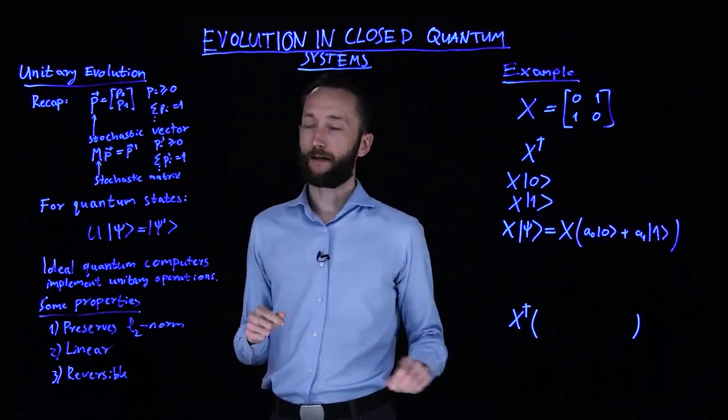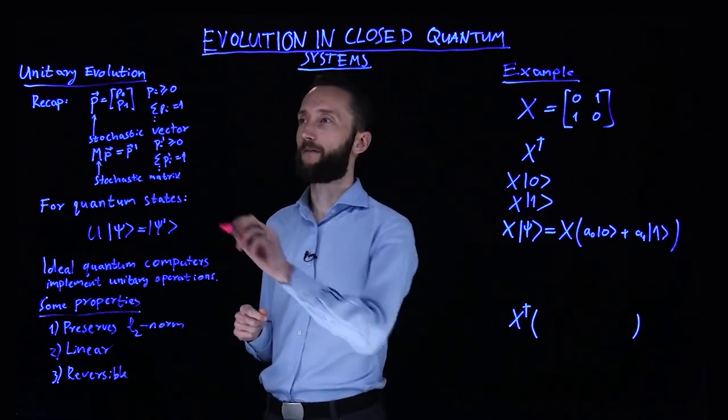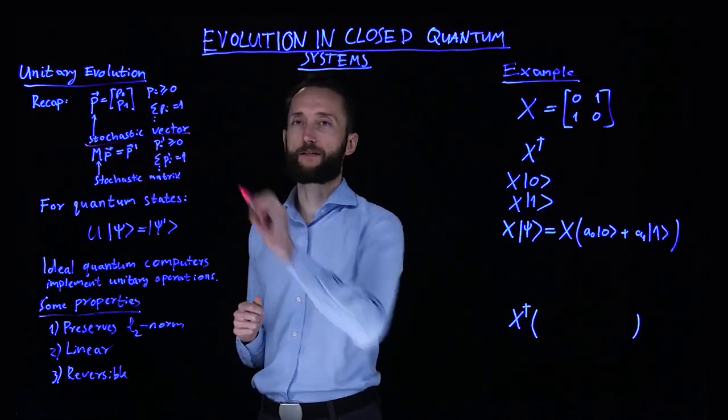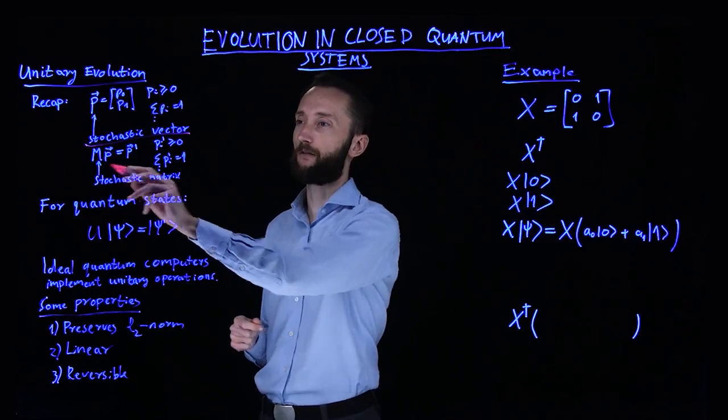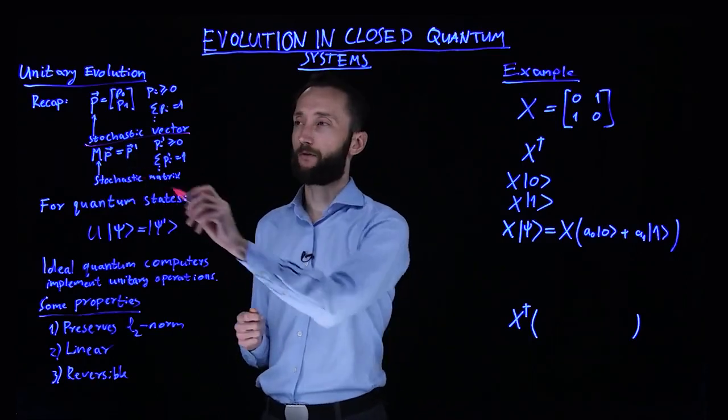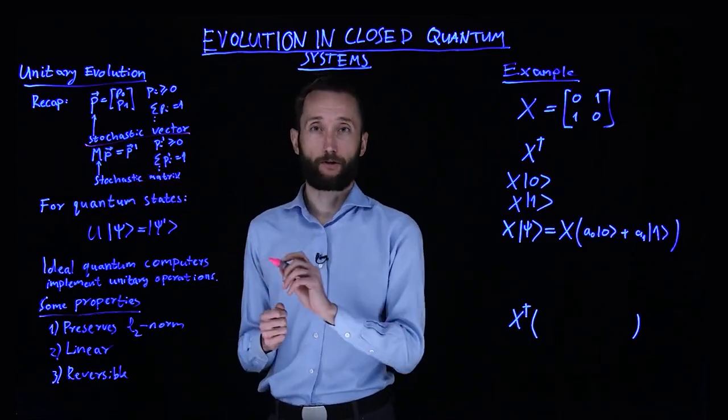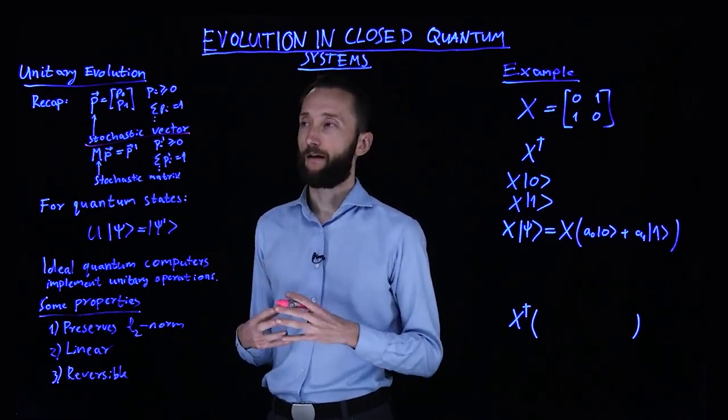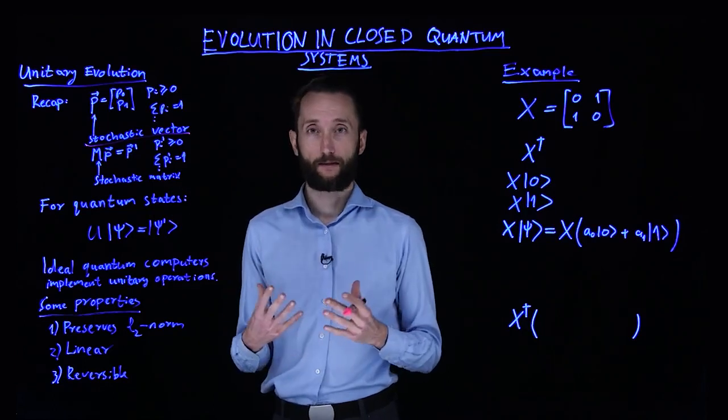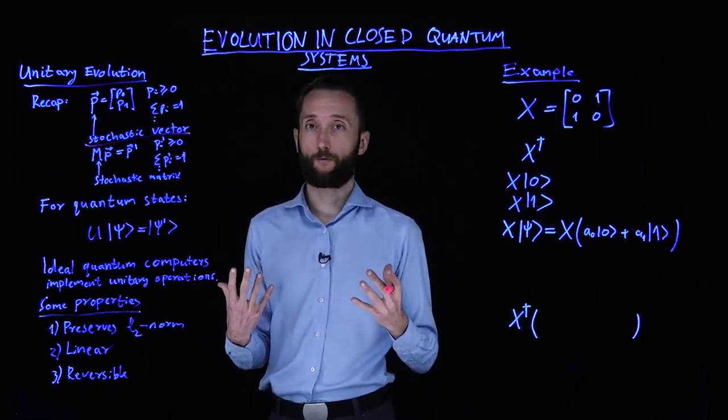So remember that we have stochastic vectors which fulfill certain conditions and we transform them with something called stochastic matrices. So after the transformation, whatever you get is still a stochastic vector, it's still a probability distribution. And in this case, this is a left stochastic matrix, which means that the columns of this matrix add up to one.